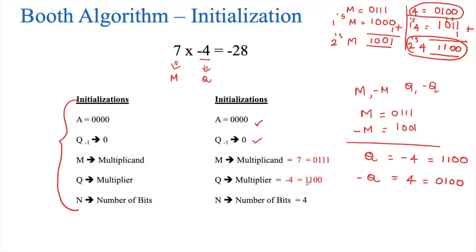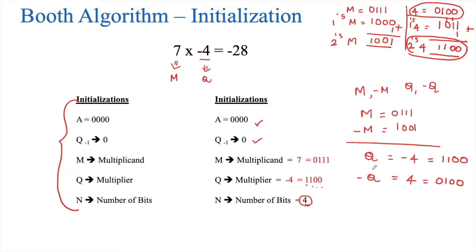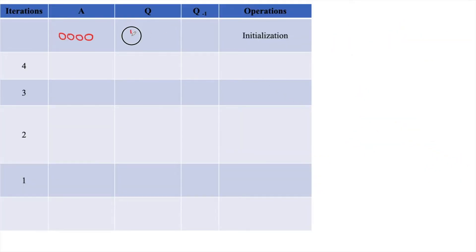We will start the algorithm. We make a table for our initializations: A equals 0000, Q equals 1100 (which is minus 4), and Q minus 1 is 0. Now, going to the flowchart, we check Q0 and Q minus 1. Q0 is 0 and Q minus 1 is 0.